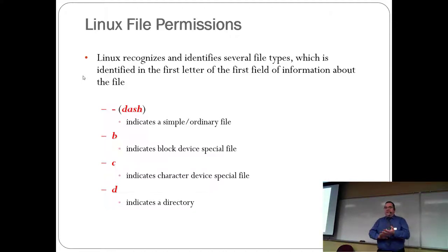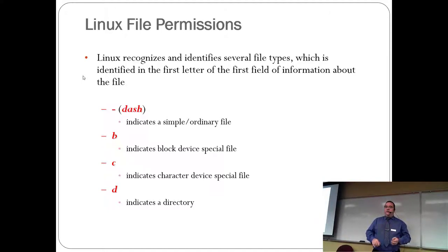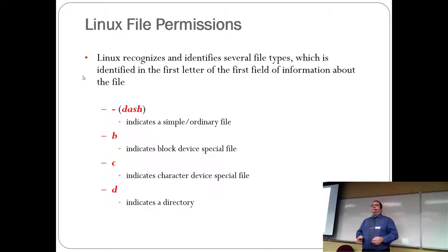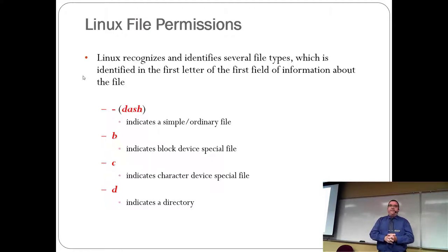That first character: a dash means it's a plain file, 'b' means a block device. Block devices don't exist in Windows — the Linux operating system uses a file to talk to your hardware. There was a time when you could cat the contents of a file and redirect it into a block device, sending data to a printer via serial port 1.